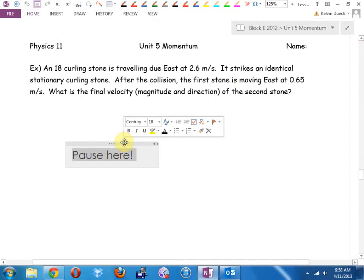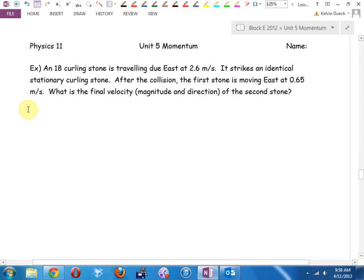So we wrote last day, paused here. The idea we're getting at is momentum is conserved. Next example: we have an 18-kilogram curling stone traveling due east. Since they gave me a compass direction, I should go north, east, south, west somewhere on my question. It's traveling due east at 2.6 meters per second. It strikes an identical stationary curling stone. After the collision, the first stone is moving east at 0.65 meters per second. What's the final velocity, magnitude and direction, of the second stone?